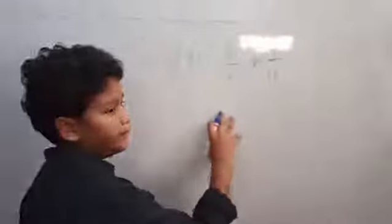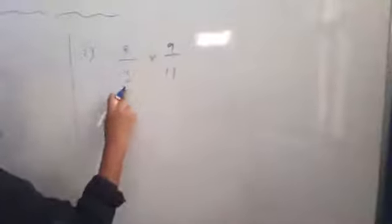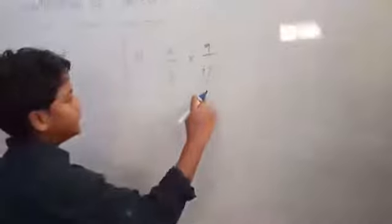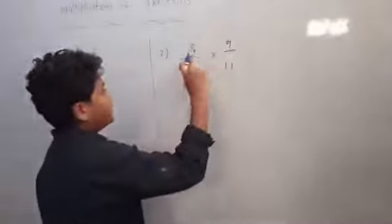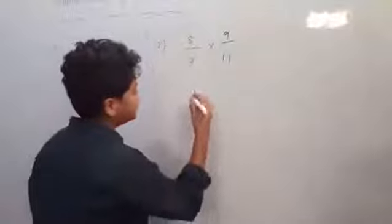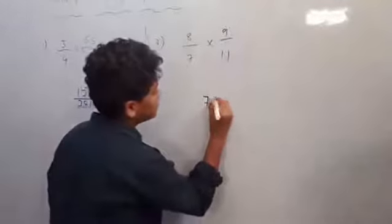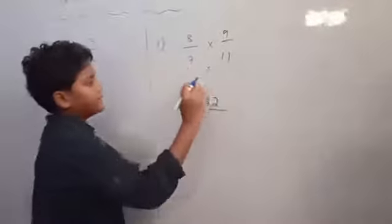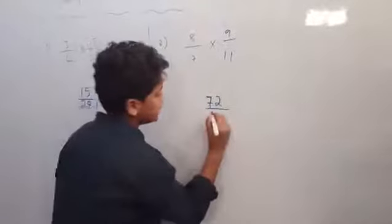Next problem: 8 by 7 into 9 by 11. Numerator: 8 9's are 72. Denominator: 7 11's are 77.